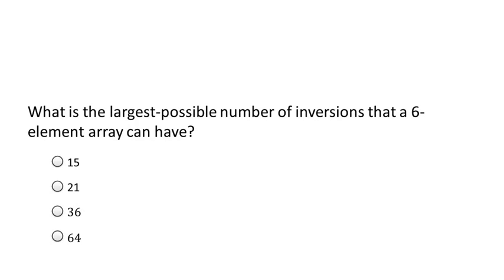So the answer to this question is the first one, fifteen, or in general, in an n element array, the largest number of inversions is n choose two. Also known as n times n minus one over two. Which again, in the case of a six element array is going to evaluate to fifteen.